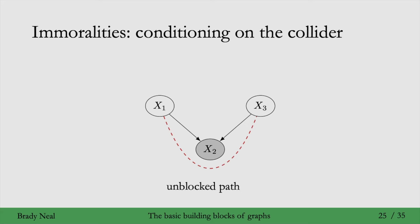Right? So, it's the opposite of what was happening with chains and forks. So, even though x1 and x3 were independent unconditionally, then when we learn some information about the outcome of x2, when we condition on x2, that induces dependence between x1 and x3.